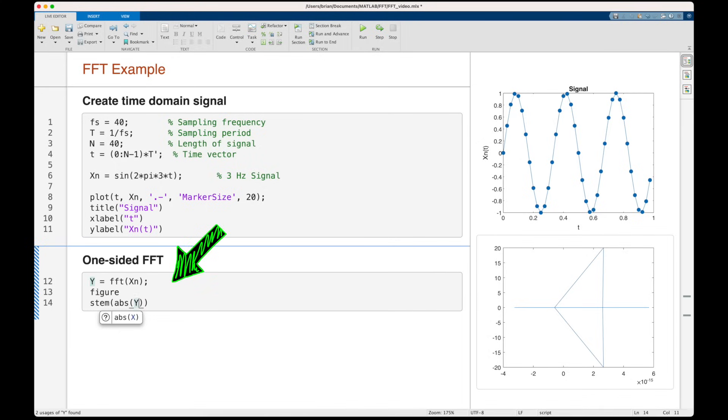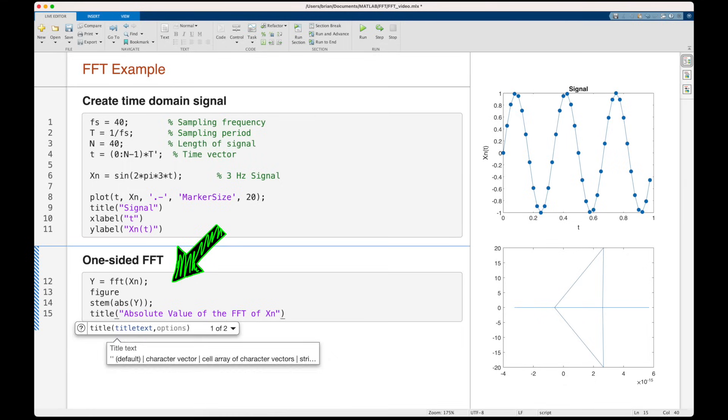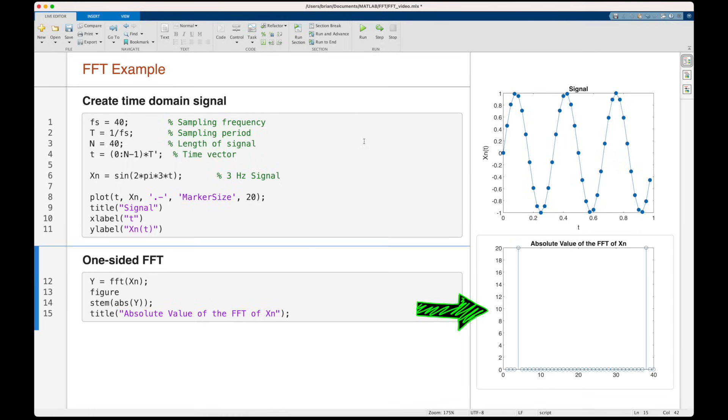However, for this example, we just want to look at the magnitude of the response, which we can get by taking the absolute value. And check this out. We have our two peaks mirrored about the Nyquist frequency, just as we expect.